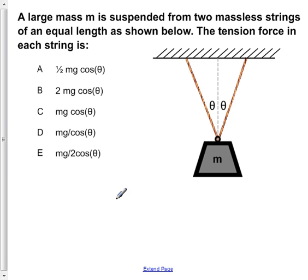A large mass m is suspended from two massless strings of an equal length as shown below. The tension force in each string is... So for this type of problem, the first thing we want to do is draw the free body diagram for this system.